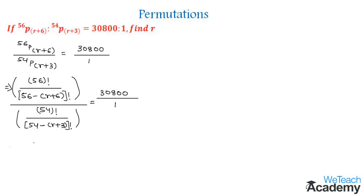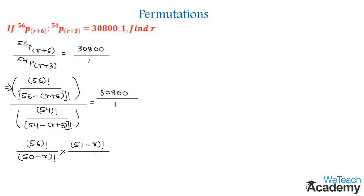This comes as 56 factorial divided by (50 minus r) factorial. Then, reciprocating the denominator term, we get (51 minus r) factorial divided by 54 factorial, equal to 30800.